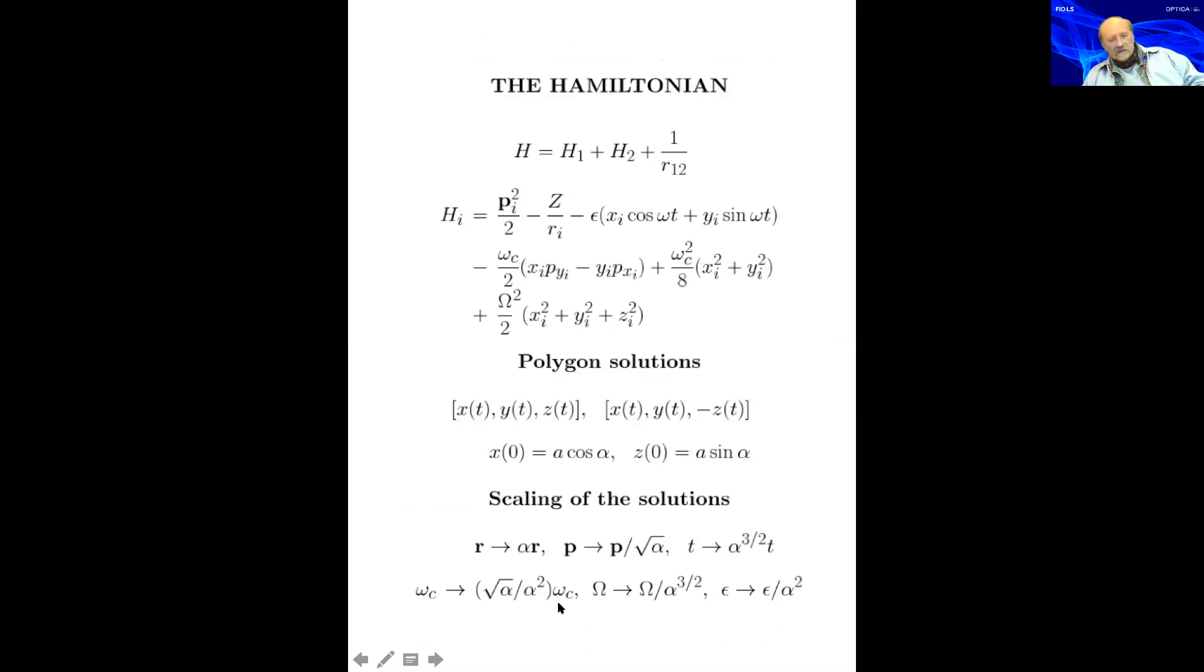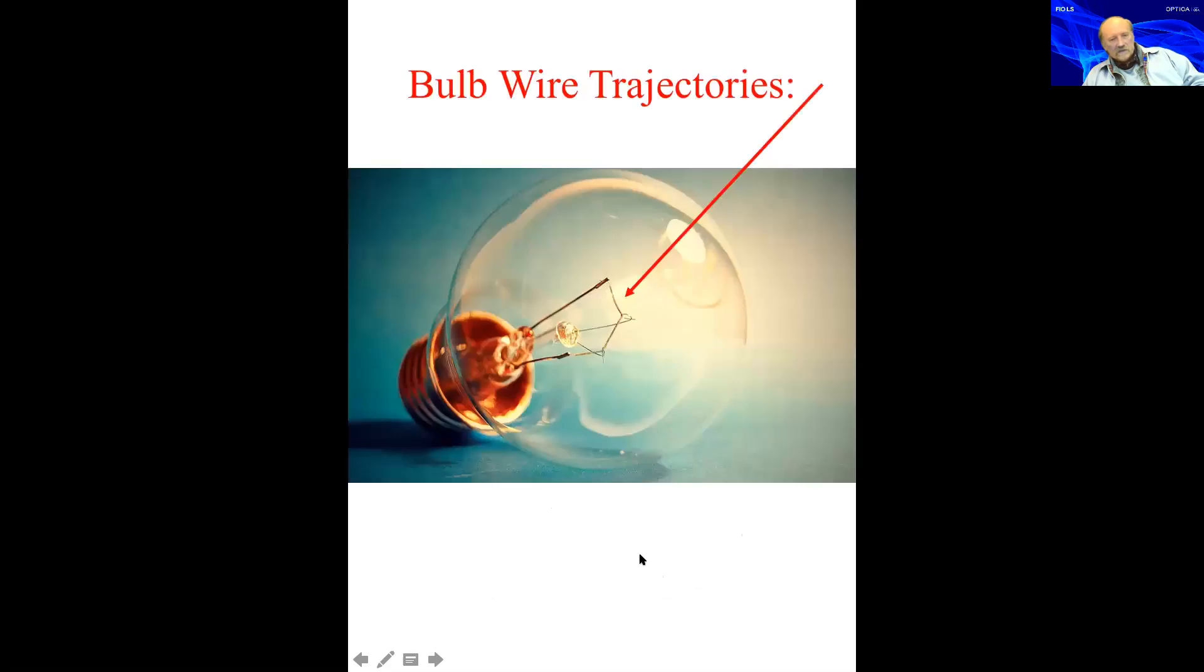Now we go to the bulb, what I call bulb wire trajectories, because they resemble the tungsten wire of the old bulb. This is the old bulb with the tungsten wire.